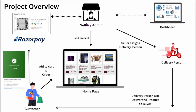As soon as the customer makes the payment, the admin can see the payment details in his dashboard. Since we have integrated Razorpay, the seller can also see the received amount in his Razorpay dashboard. Once payment is confirmed, the admin sees the order and can assign a delivery person. That delivery person logs in, sees the assigned order, and updates the delivery status. The customer can track the delivery status at any time, and once delivered, the status updates for both the customer and admin.